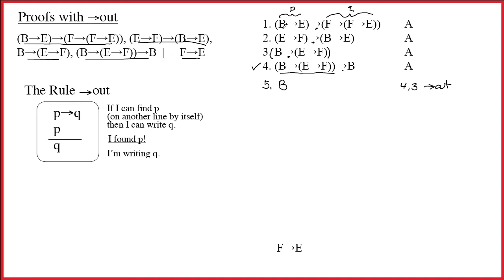Okay, arrow was the main connective. I say to myself, if I can find B arrow E in another line by itself, I can write F arrow F arrow E. Has B arrow E shown up? No, it hasn't. I still don't have it. Line two, if I can find E arrow F on another line by itself, then I can write B arrow E. E arrow F still hasn't shown up by itself. Can't work on two.